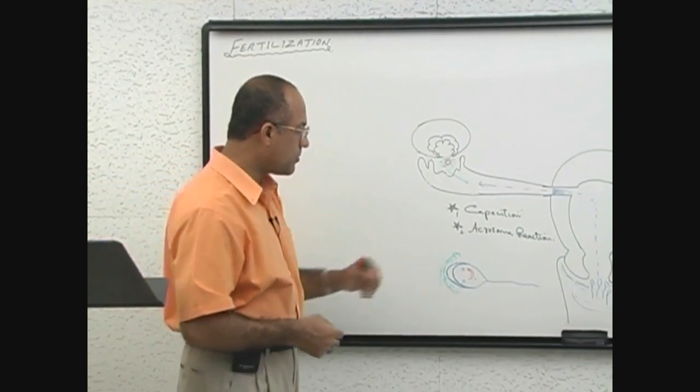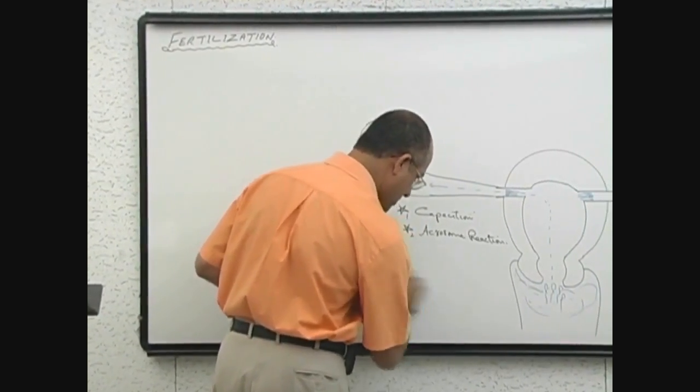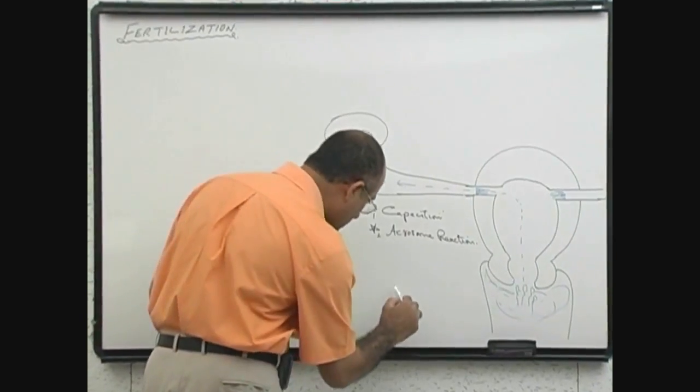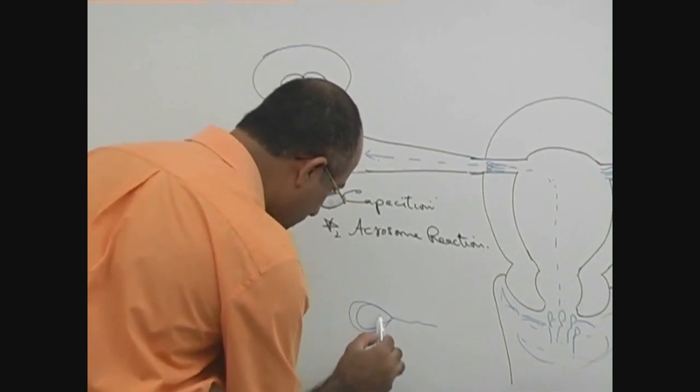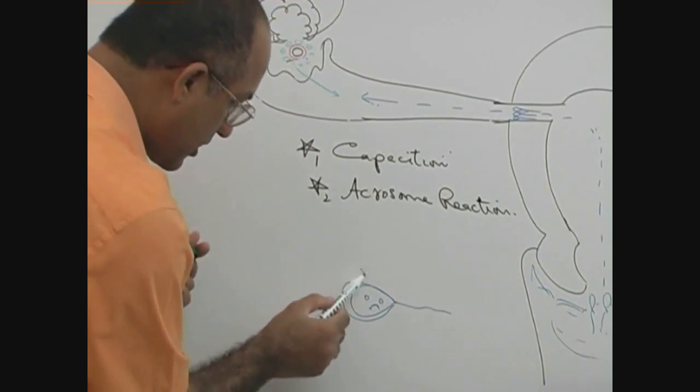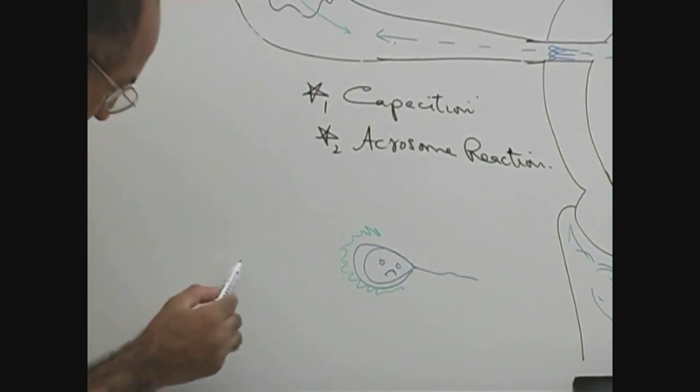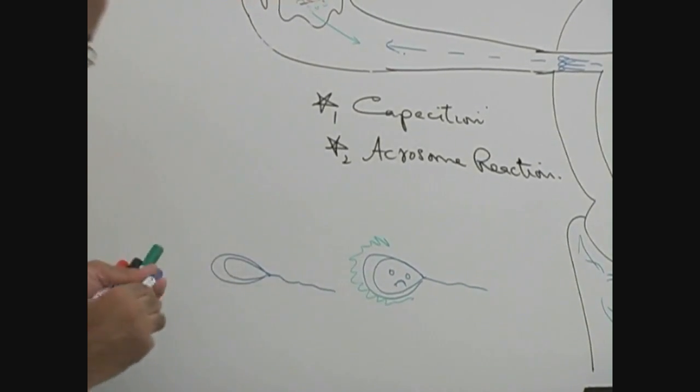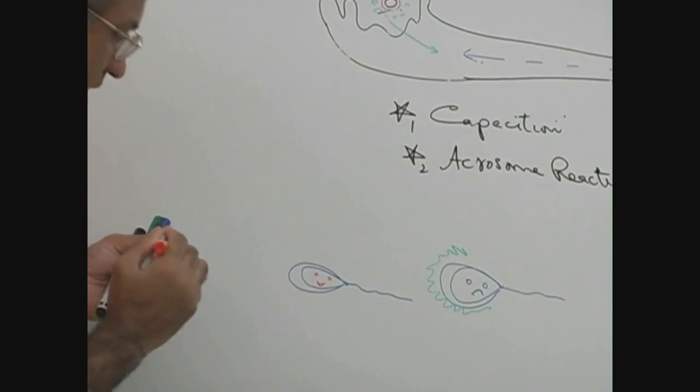After that, when sperm is capacitated, we make our sperm at two stages. First it is a very sad sperm because it is not capacitated. Then it is capacitated and becomes a somewhat happy sperm.